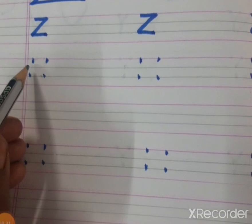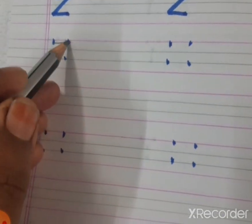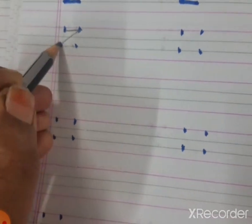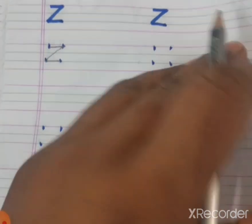You can see dots. What do you have to do first? Sleeping line. Then slanting line. Then sleeping line. This is Z for zebra.